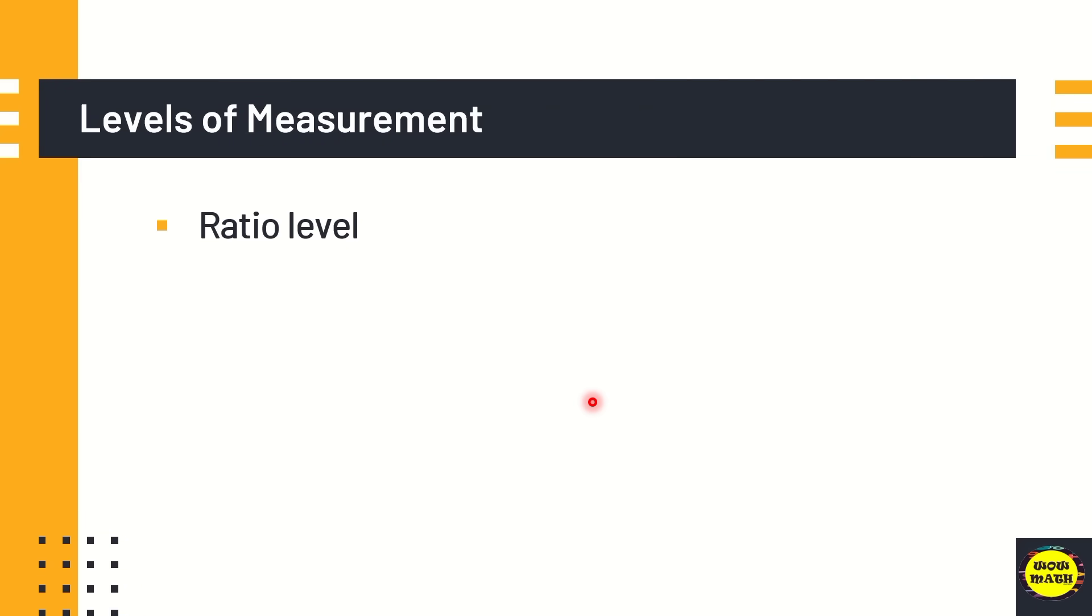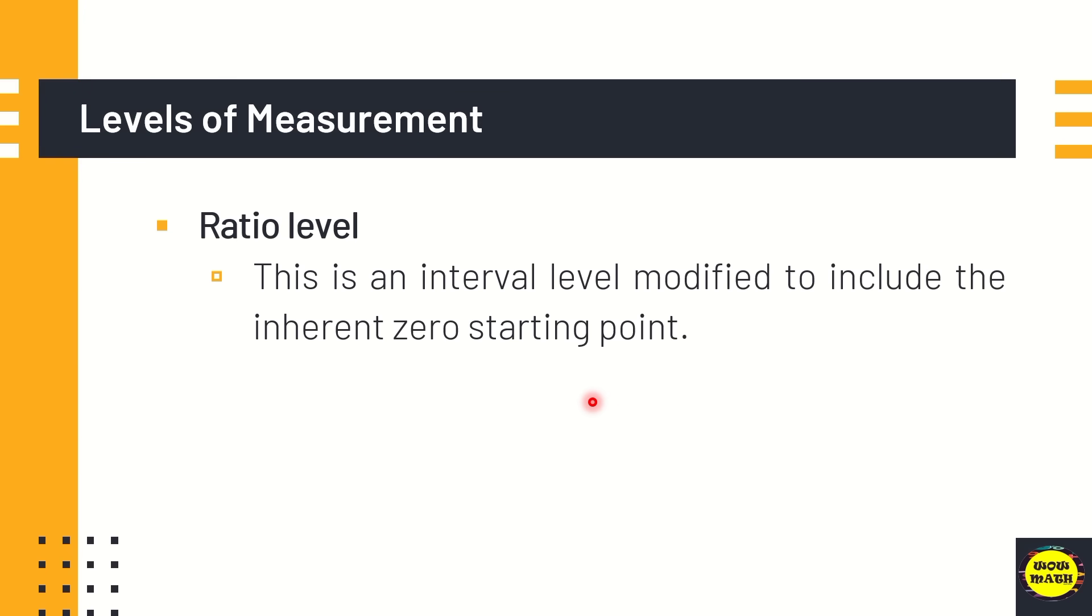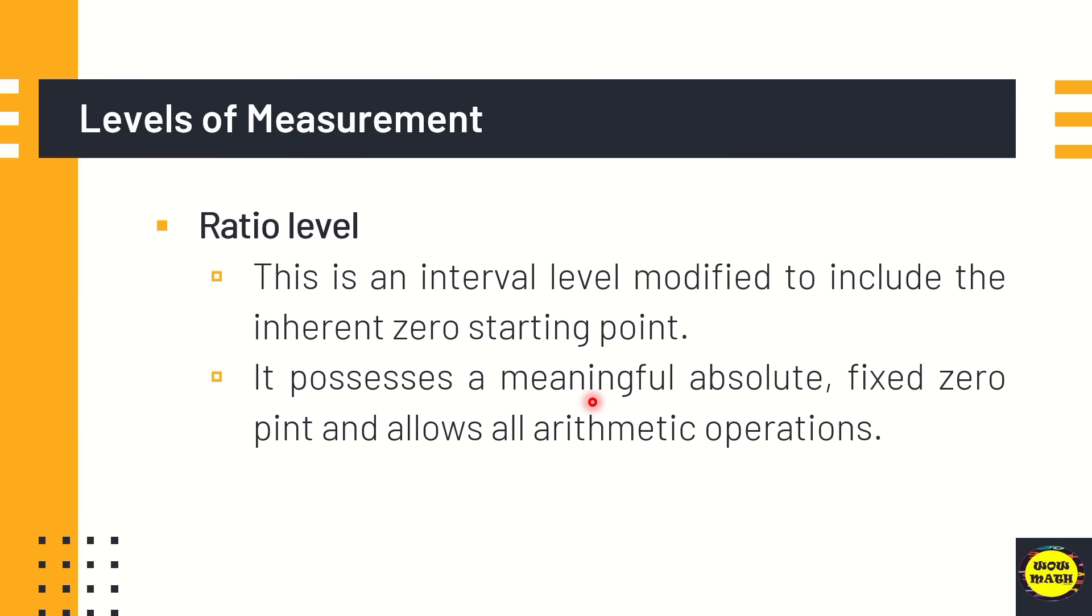The last level of levels of measurement is the ratio level. This is the highest level among the four. This is an interval level modified to include the inherent series starting point. So it tells us that one unit has so many times as much of the property as does another unit. The ratio level possesses meaningful, absolute, fixed zero point, and allows all arithmetic operation. For example, the number of siblings, weight, and height.